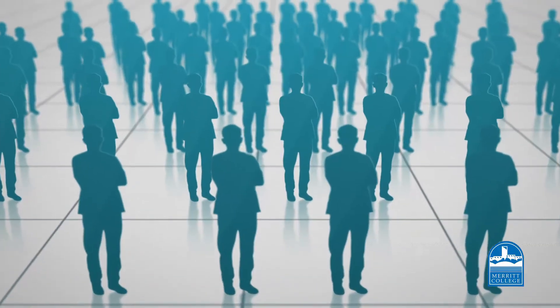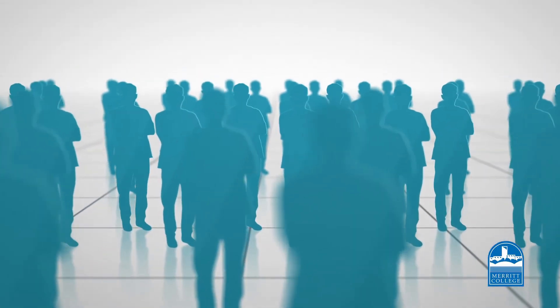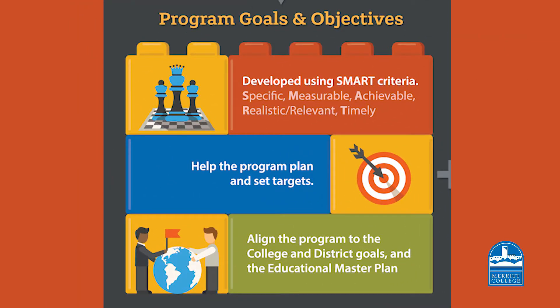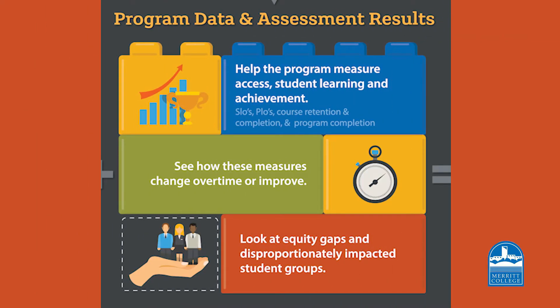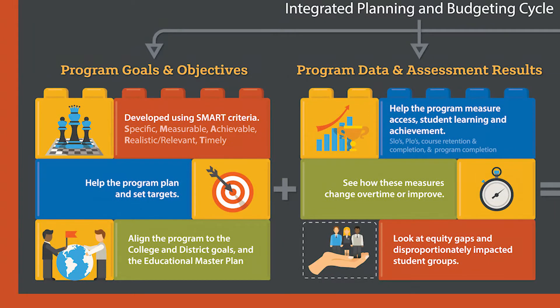At Merritt College, program and department goals should align with the college goals and the Peralta Community College District goals, as well as the educational master plan. Goals and objectives are informed by the second building block of the program review and annual program updates: program data and learning outcome assessments. Together, these blocks build requests for resources that programs and departments need to improve student learning and success.